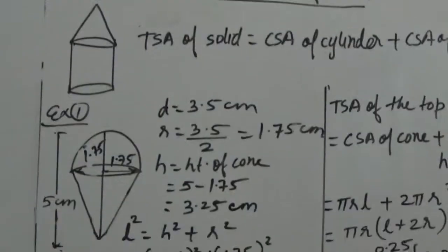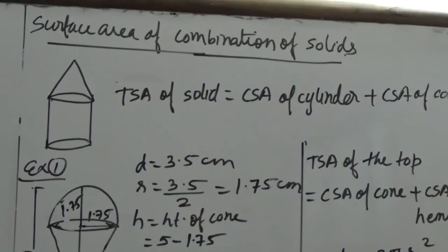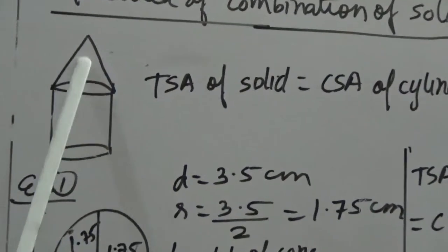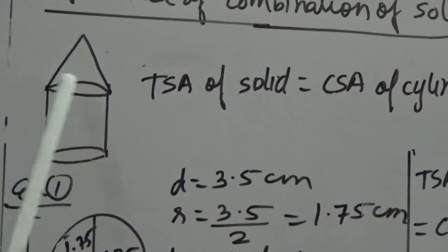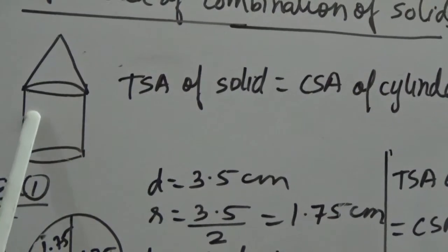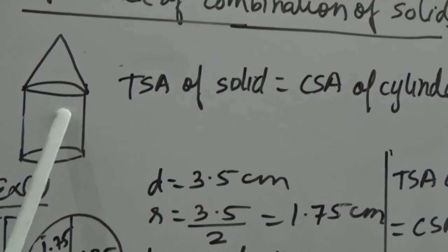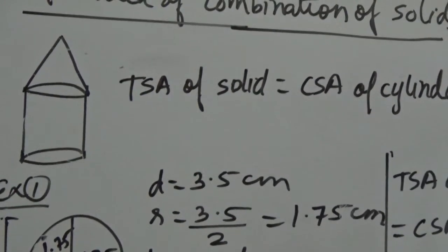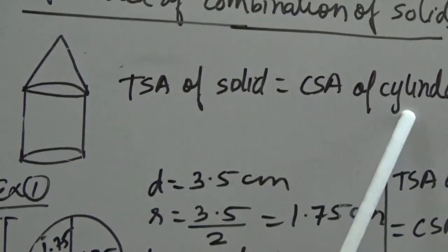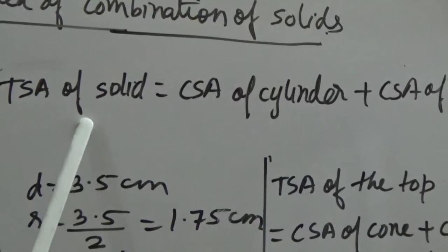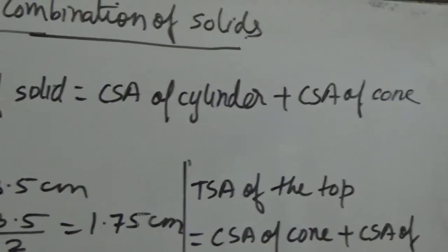Now we will see the next topic: surface area of the combination of solids — how to find the surface area when two or more solids are combined. When solids are combined, some portions disappear. So we do not add the TSA of each solid; instead, we find the total surface area by adding only the CSA of each of the combined solids.